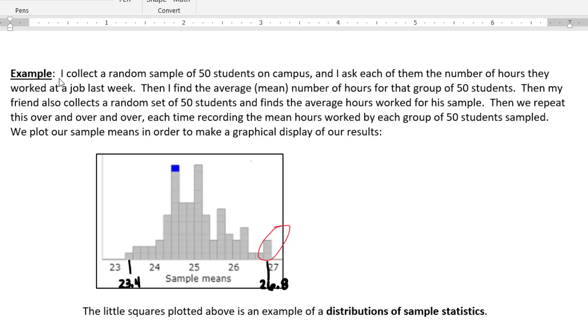So in this example, we're doing a statistical study where I collect a random sample of 50 students on campus and I ask each of them the number of hours that they worked at a job last week. Then I find the average number of hours worked for that group of 50 students. So I find the mean of those 50 students' times.